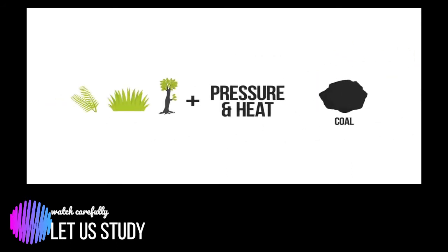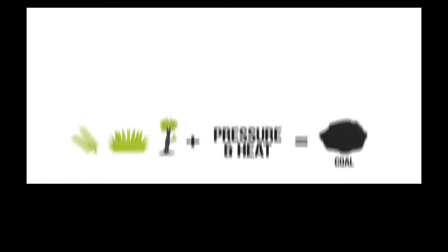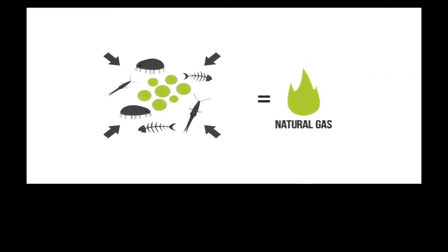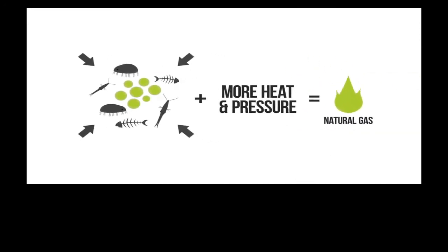Coal was formed from ferns, plants, and trees which hardened due to pressure and heat. Oil was formed from small organisms like zooplankton and algae where pressure caused the more complex organic matter to decompose. Natural gas was formed by the same process as oil only it was exposed to more heat and pressure causing it to further decompose and turn into a gaseous form.